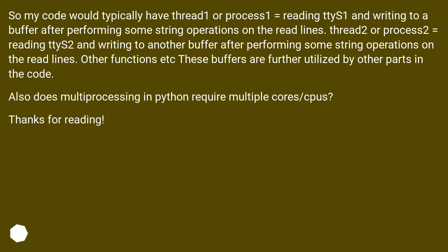My code would typically have thread 1 or process 1 reading tz1 and writing to a buffer after performing some string operations on the read lines. Thread 2 or process 2 reads tz2 and writes to another buffer after performing some string operations. These buffers are further utilized by other parts of the code. Also, does multiprocessing in Python require multiple cores?